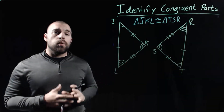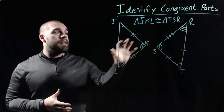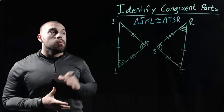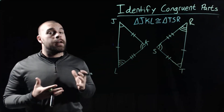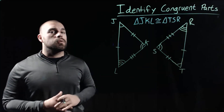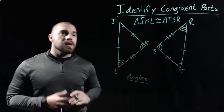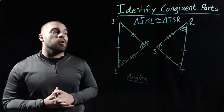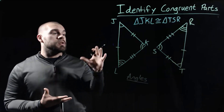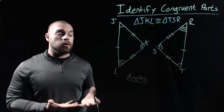In this example we're given two congruent triangles: triangle JKL on the left and triangle TSR on the right-hand side. What we want to do is go through and identify all of the different congruent pieces of these triangles. Let's start off with the angles. The easiest thing to do is look at the diagram and the markings given to us — we've got a bunch of arcs in the angles that show that those things are congruent.